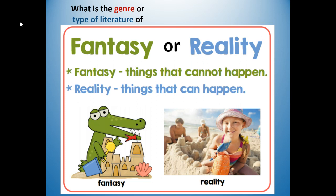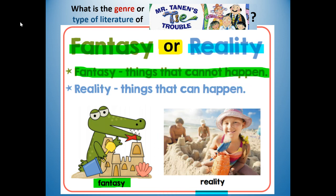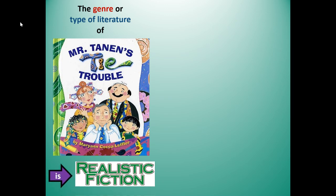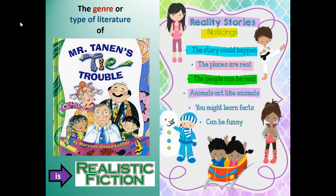But what is the genre or type of literature of Mr. Tannen's Tie Trouble? Is it fantasy? Fantasy means things that cannot happen. Or reality? Reality means things that can happen. Well, the genre or type of literature of Mr. Tannen's Tie Trouble is realistic fiction. It's made up, but it is tied to what you see in real life. Here's our reality stories noticings: the story could happen, the places are real, the people can be real, animals act like animals, and you might learn facts, and it can be funny. But it is still fiction — it's realistic fiction, based in reality.